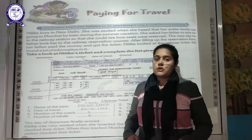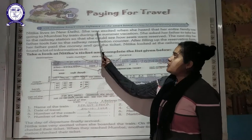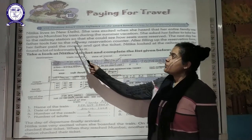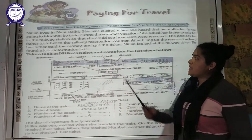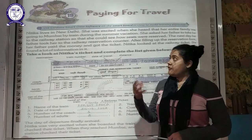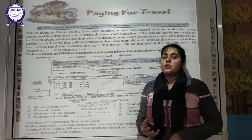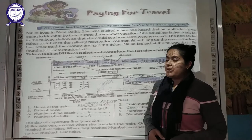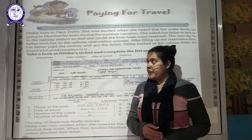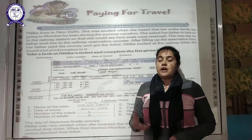First of all, we have to discuss about a girl named Nitika. Nitika lives in New Delhi and she was very excited when she heard that her entire family was going to Mumbai by train during the summer vacation. Similarly, Nitika planned the summer vacation with her family, travelling from New Delhi to Mumbai by train.